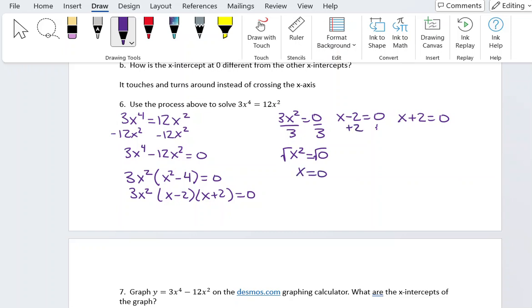For the second one, I'm adding 2 to both sides, I get x equals 2. And then subtracting 2 from both sides, and I get x equals minus 2. So these are my 3 answers here: 0, 2, and negative 2.